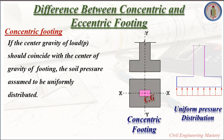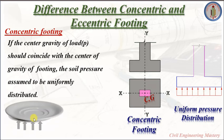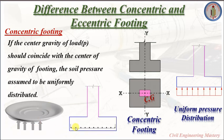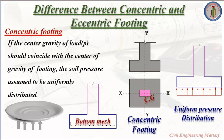Now let us discuss about the behavior of the footing slab under soil pressure. The soil pressure is acting as a downward pressure, so the soil pressure below the footing will tend to bend the footing slab upward — imagine like a saucer type. The footing slab will tend to bend upward due to the downward pressure. In order to avoid that, we are providing reinforcement at the bottom of the footing as a bottom mesh.